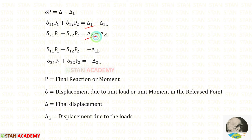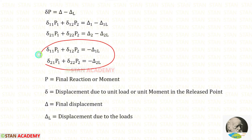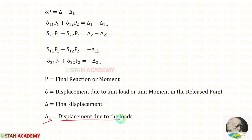Delta 1 and Delta 2 are the final displacements — the settlement or rotations in the beam. At point B there is no settlement or rotation, so Delta 1 and Delta 2 will be zero. We will then need to find Delta 1L and Delta 2L, which are the displacements due to the applied loads.